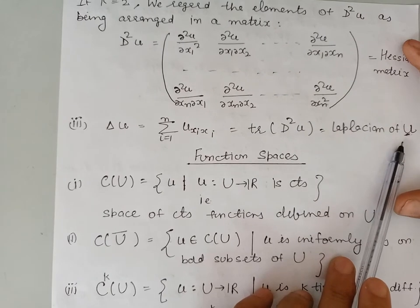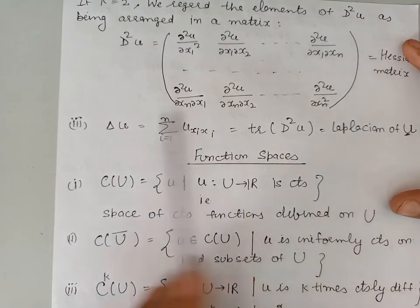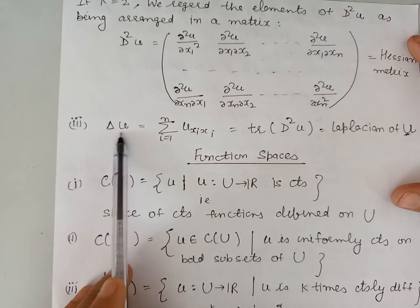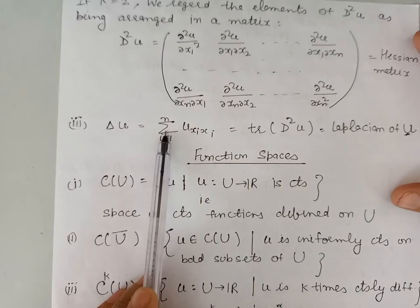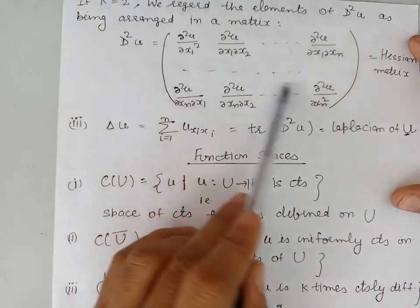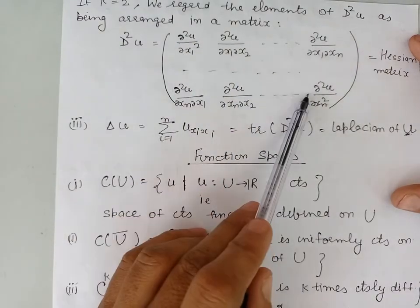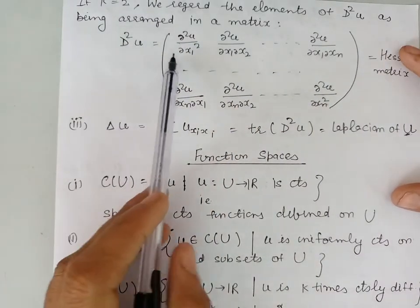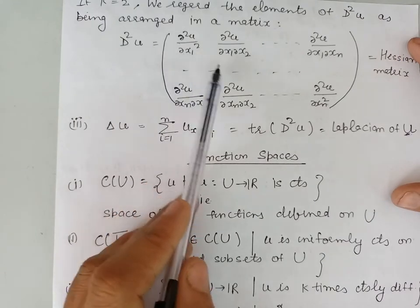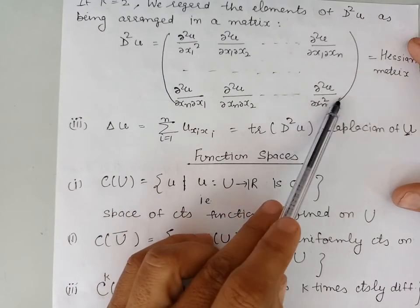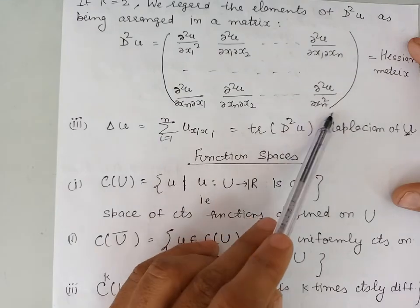If we take the sum of the diagonal elements of the Hessian matrix, we get the Laplacian of the function u, denoted by Δu. So Δu is given by the sum of all diagonal elements: ∂²u/∂x1² + ∂²u/∂x2² + ... + ∂²u/∂xn².